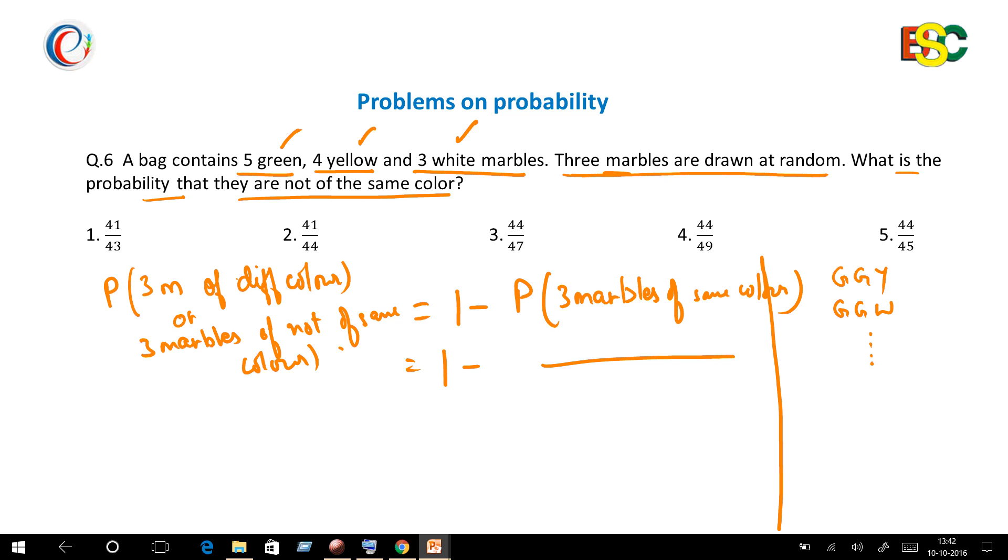Now if you get three marbles of green color, it will be 5C3. Since it is a case of OR—either you will get three marbles of five or four or three—it's a case of OR, and in case of OR we always do addition, therefore I'll put the sign of addition here.